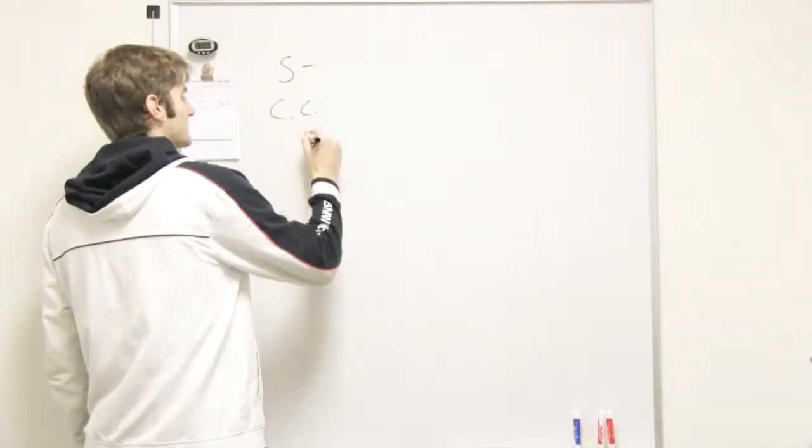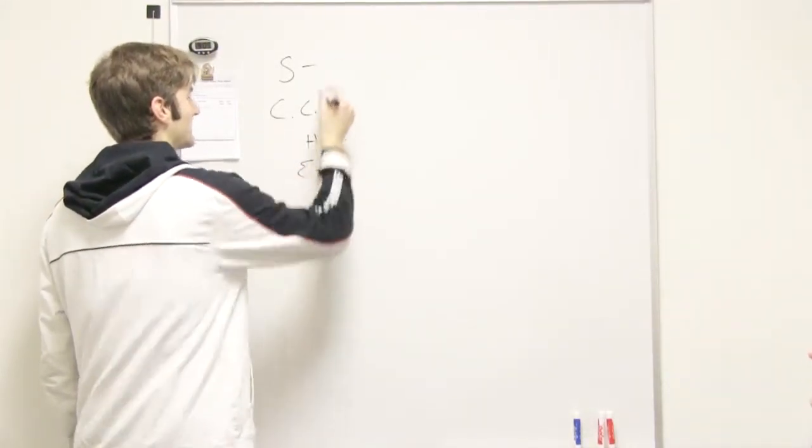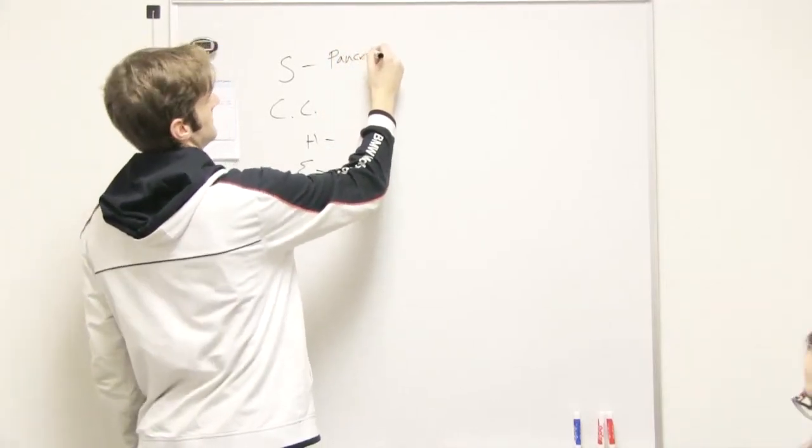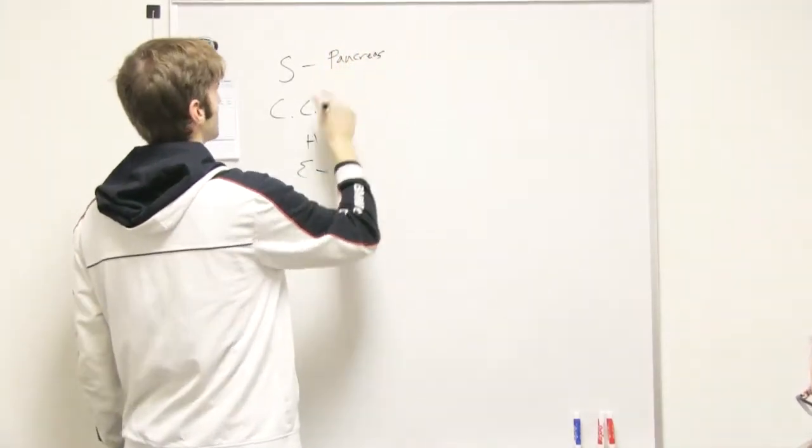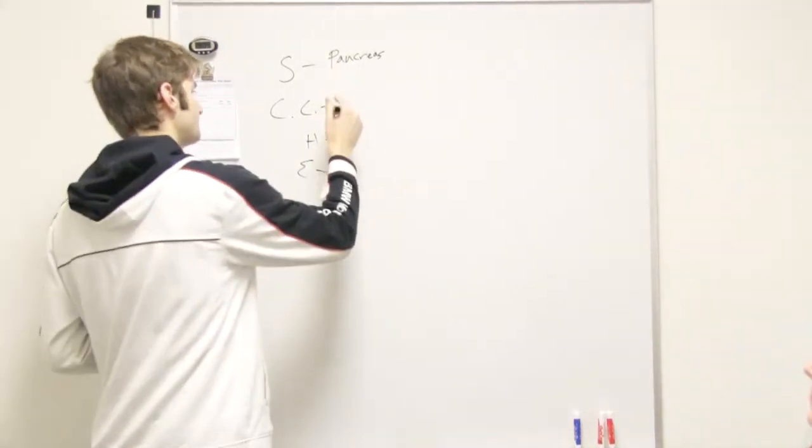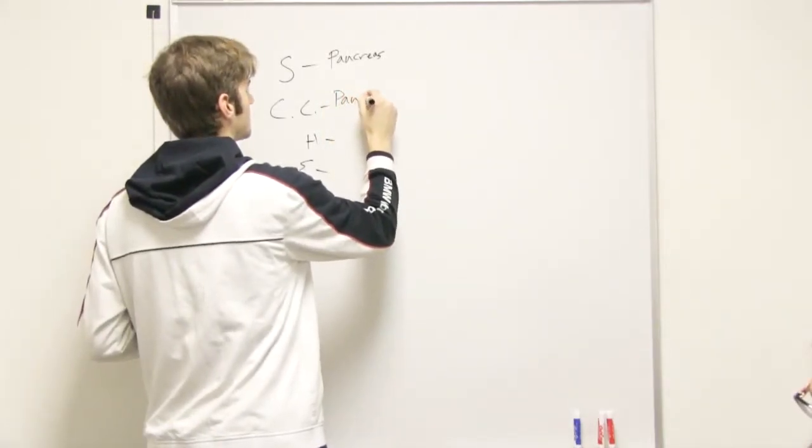So there's the hormone, and then there's the effector. The sensor is the pancreas. The pancreas senses the amount of blood sugar in the blood. I think I misspelled it, but oh well.